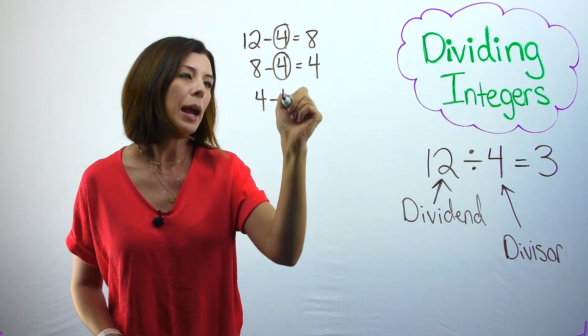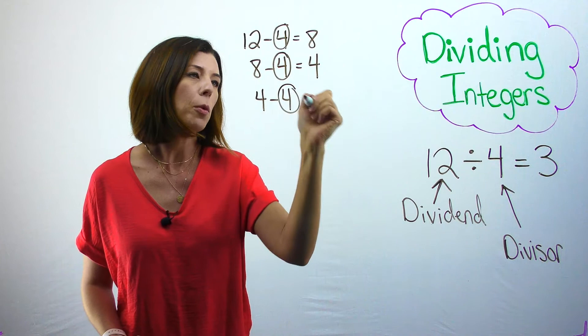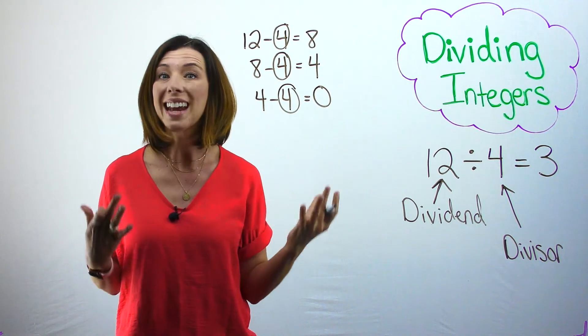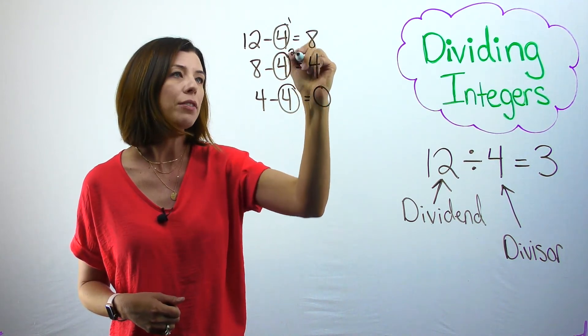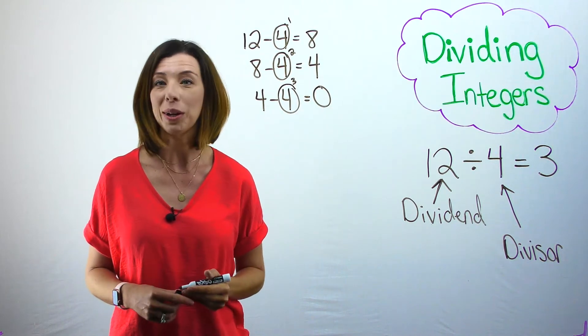Then I have 4, and again, I'm going to make one final group of 4. And I am left with nothing left over. You can see that I have 1, 2, 3 groups.